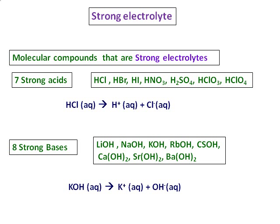Apart from ionic compounds and the strong acids, the eight strong bases also ionize completely. For example, potassium hydroxide gives you potassium ions and hydroxide ions, making it a strong electrolyte.